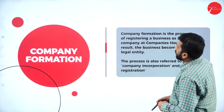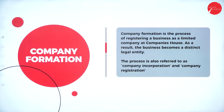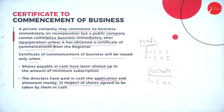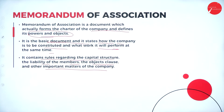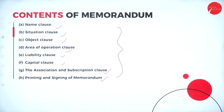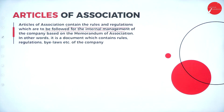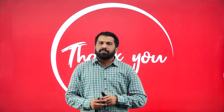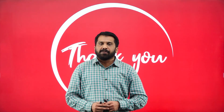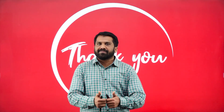So, to summarize: company formation, certificate of commencement, steps for private limited company registration, memorandum of association and its contents, and articles of association and its contents — this is all about formation of company. It is one of the easiest topics and you can score well. Please concentrate on memorandum and articles in this topic. Thank you.